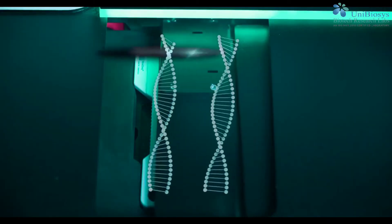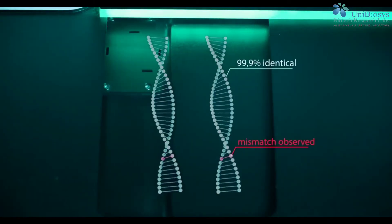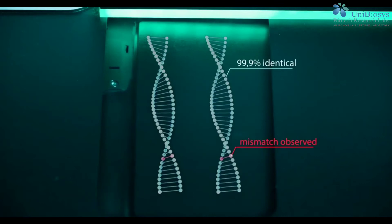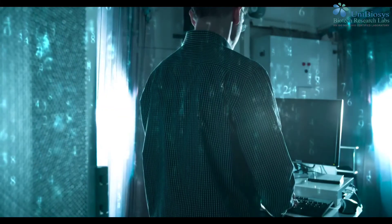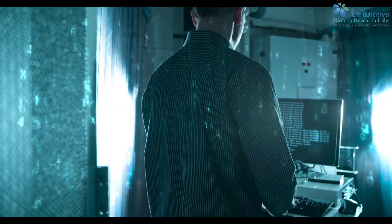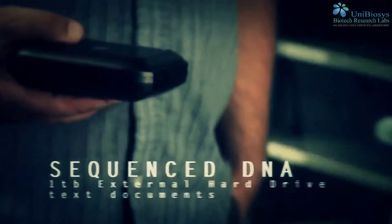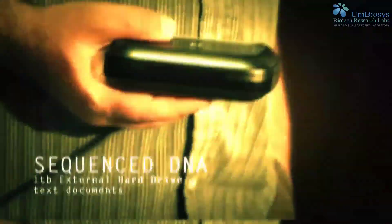Sequence alignment is a way of arranging the sequence of DNA, RNA, or protein to identify regions of similarity. The sequence similarity is made between a known and unknown sequence. In bioinformatics, we use BLAST. BLAST is an algorithm or program for comparing primary biological sequence information. It can rapidly align and compare a query DNA sequence with a database of sequences.